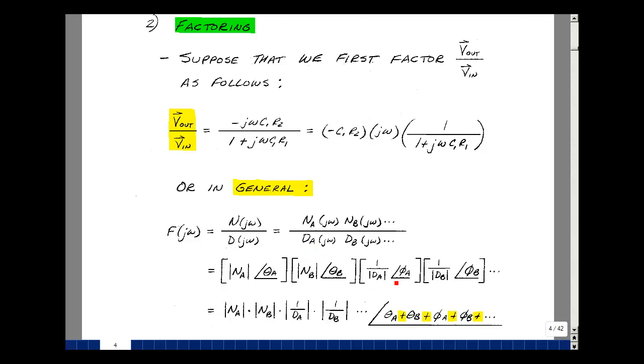I'm just going to call that phi sub A. Likewise, for this term Db, the reciprocal for the magnitude, and whatever angle is here, we'll take the negative of it. I'm just going to call that phi sub B.